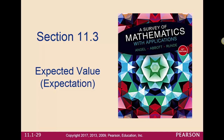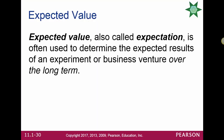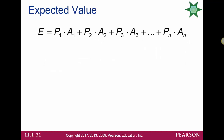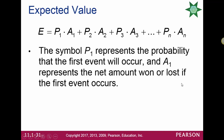Section 11.3 deals with expected value, or expectation. This is used to determine the expected results of an experiment or a business venture over the long term. To calculate it, we take the probability of each outcome times the amount that outcome is worth, and add them all up. P1 represents the probability the first event will occur, A1 the amount won or lost, and so forth.